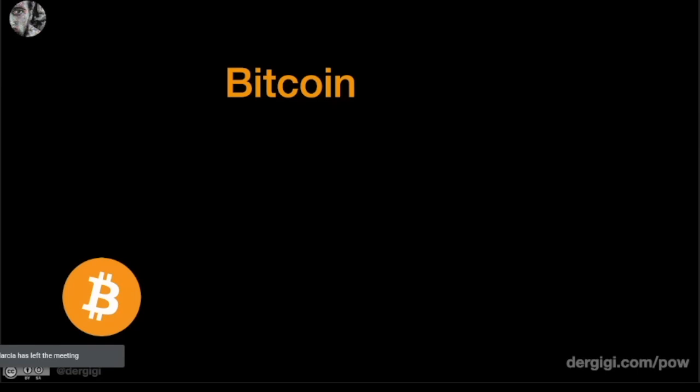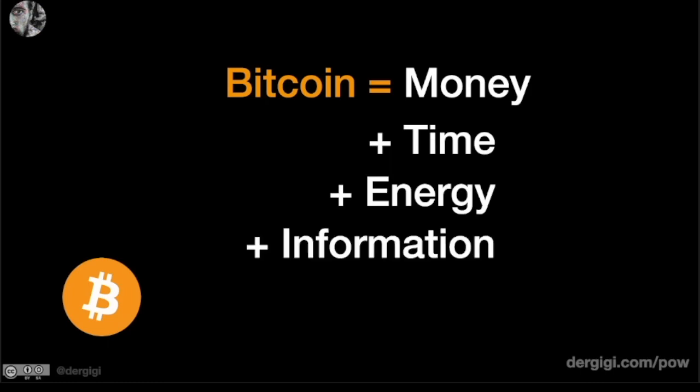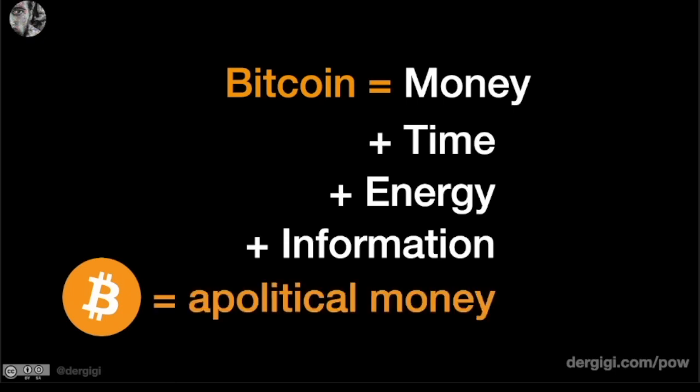So we're going to talk about Bitcoin. If you really want to annoy someone, ask them what is Bitcoin, because there are a million different answers. For the purpose of this presentation, I'm going to tell you that Bitcoin is money plus time plus energy plus information. And this combination actually creates apolitical money. If you remove any of those four from the equation, you basically have a shitcoin.